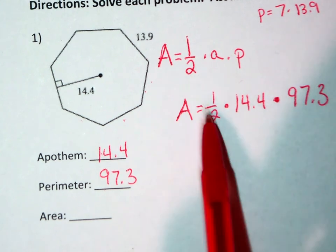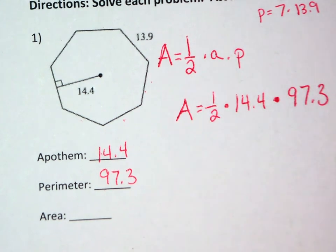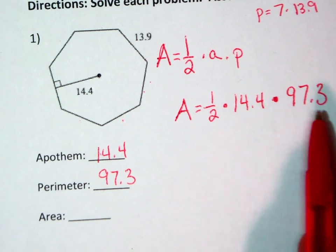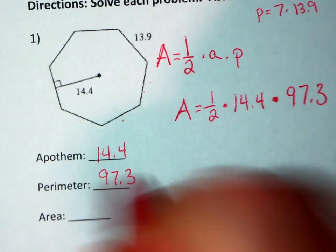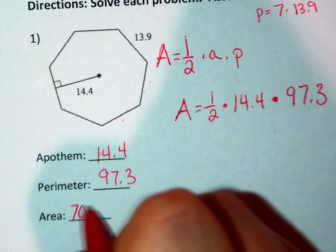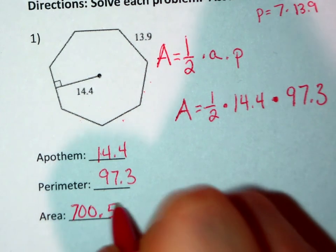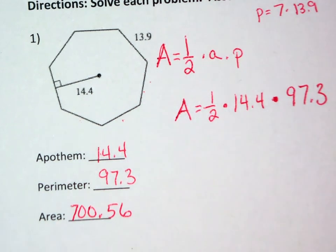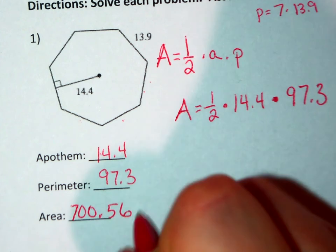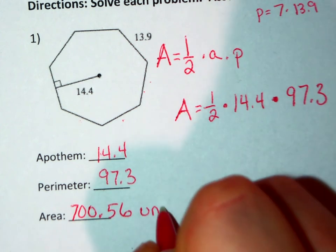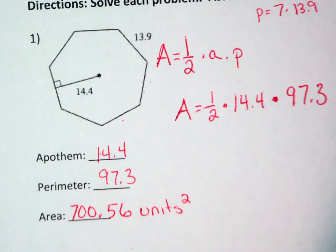As long as you have this much information, I will be good with using the calculator to calculate out your solutions. So my area is 700.56 units squared.